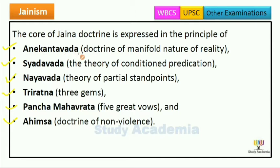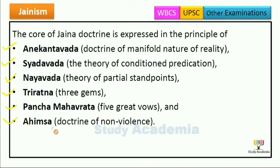Anikantavada is the Doctrine of Manifold Nature of Reality — yeh aastivikta ki kai guna prakriti ka siddhant hai. Syaadwad, yeh The Theory of Conditioned Prediction hai. Nayavada is the Theory of Partial Standpoints — aanshik drishtikon ka siddhant. Triratna means Three Jewels. Panchamahavrata means Five Great Vows, and Ahimsa is the Doctrine of Non-Violence. Yeh Jaine Doctrines ke principles hain.